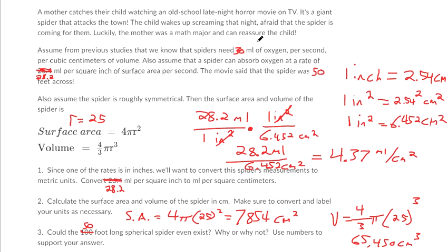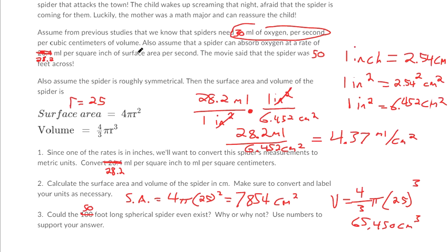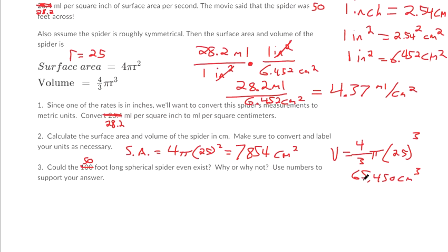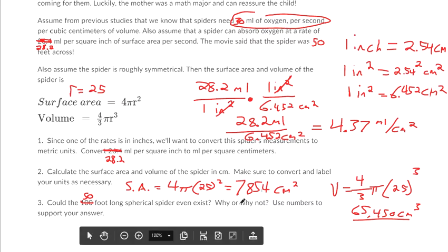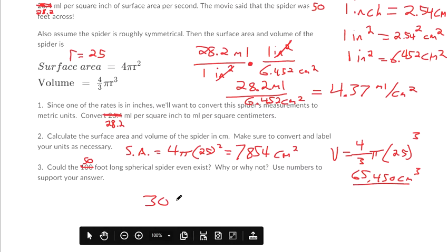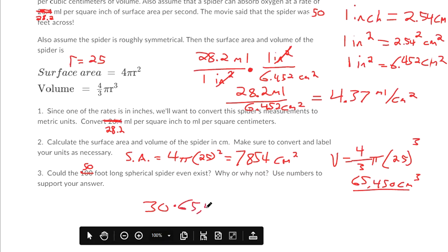They tell us a spider needs 30 milliliters of oxygen per second, per cubic centimeter of volume. And then we just found out that is equivalent to, it says a spider can absorb oxygen at a rate of 4.37 milliliters per centimeter squared. So we have this much volume, and we need 30 milliliters of oxygen per cubic centimeter of volume. So you've got to take 30, because it's 30 milliliters of oxygen per cubic centimeter, and multiply it to 65,450.